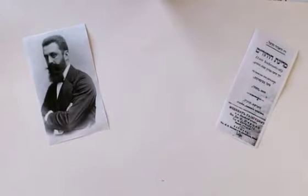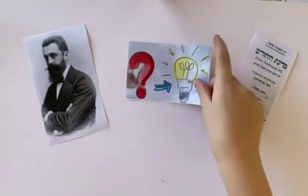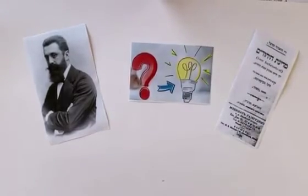Makes sense, doesn't it? The Jews had a problem, and Herzl gave them a solution. So why did they think he was crazy?